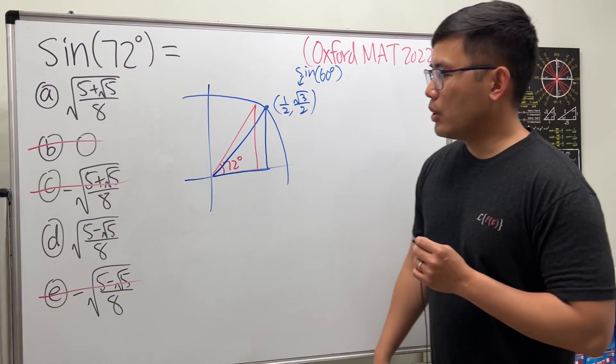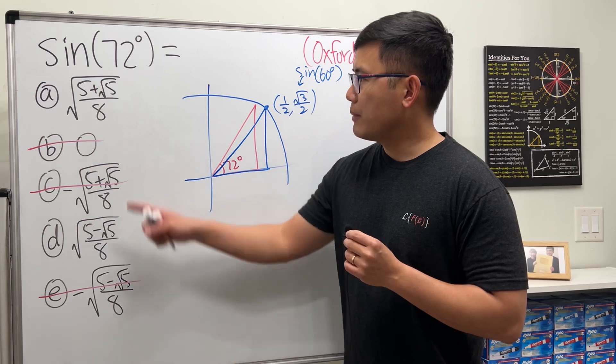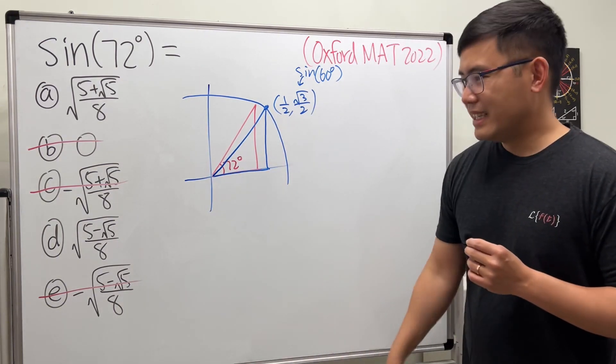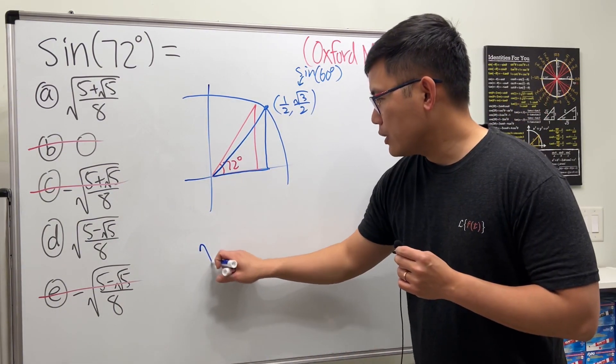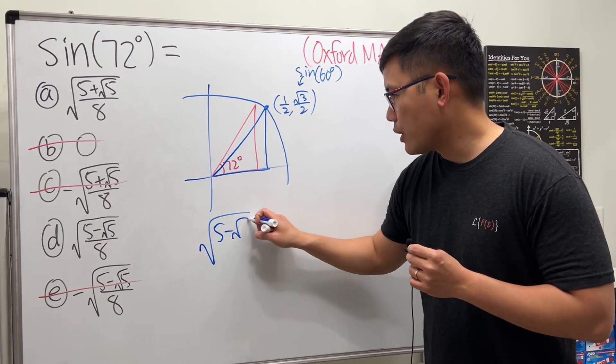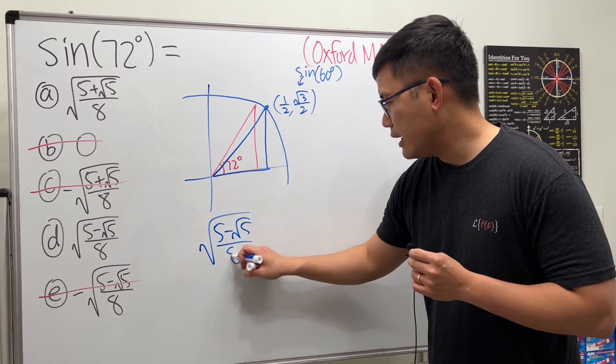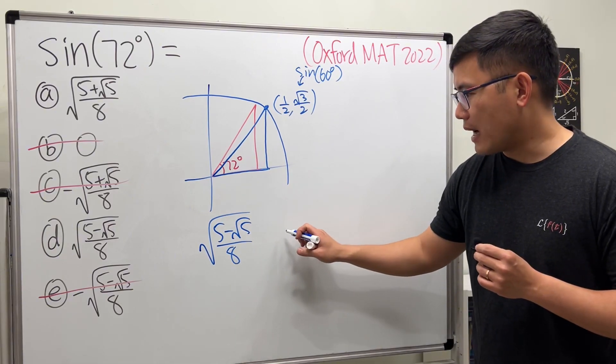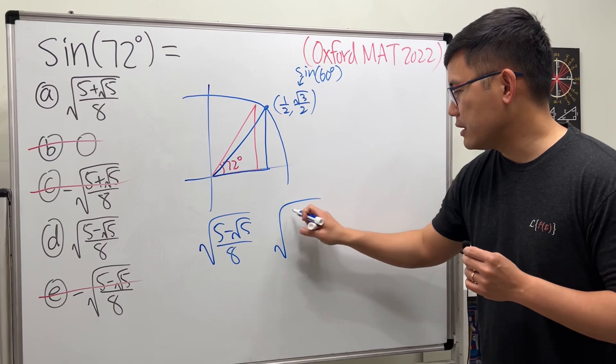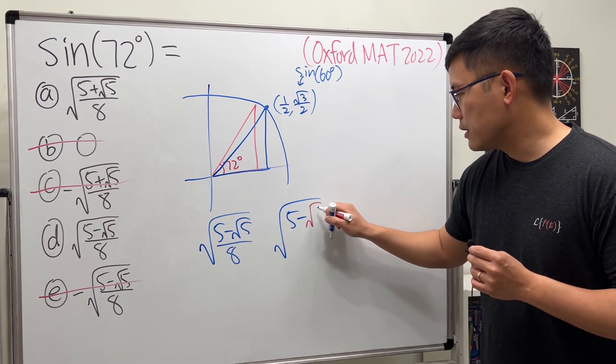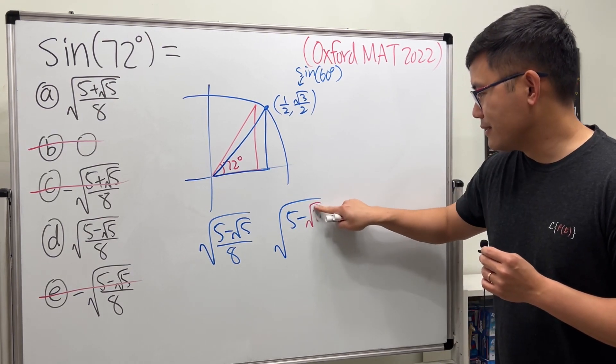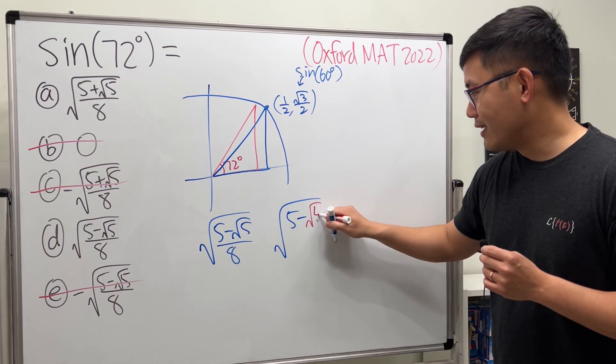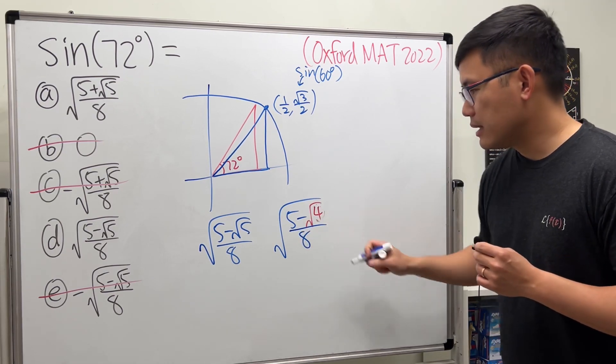Perhaps let's show this is less than that. So if you have √(5 - √5)/8, firstly I'm going to replace the √5 with √4 because we know that better—4, and over 8.